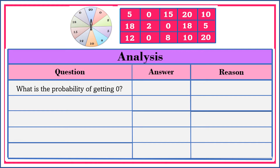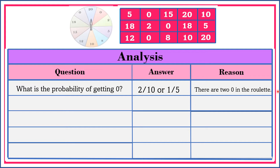Let's analyze the result. What is the probability of getting zero? Let's look at the roulette. We have two zeros here. Therefore, the probability of getting zero is 2 over 10. Don't forget to reduce your answer to its lowest term — the lowest term is 1 fifth. There are two zeros in the roulette.